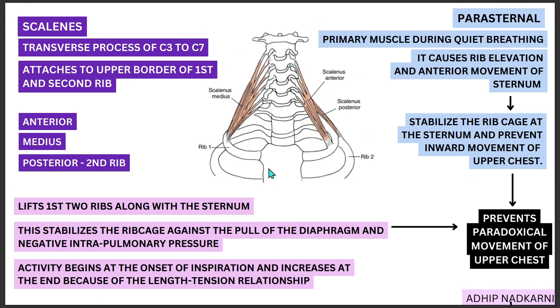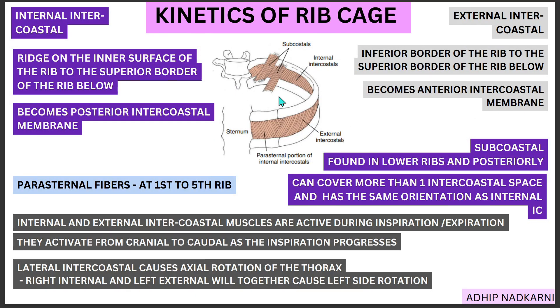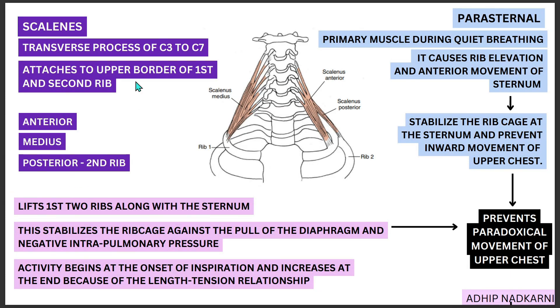In summary: we covered the intercostal muscles — internal and external, which are active during both inspiration and expiration — and the lateral intercostal, which helps in rotation of the thorax. We then moved on to the parasternal muscles and saw how the scalenes and parasternal muscles together prevent paradoxical movement of the chest by stabilizing the rib cage and sternum so that inspiration happens efficiently. That's all for today, thank you for watching.